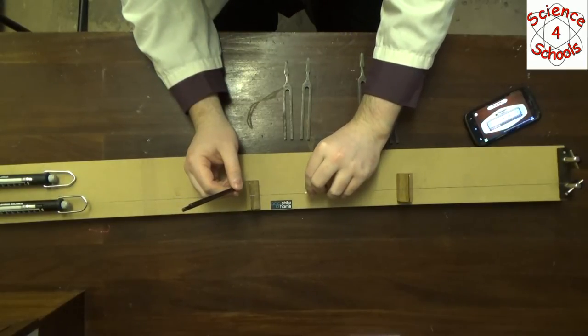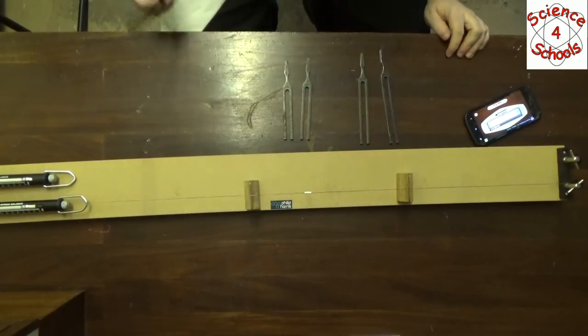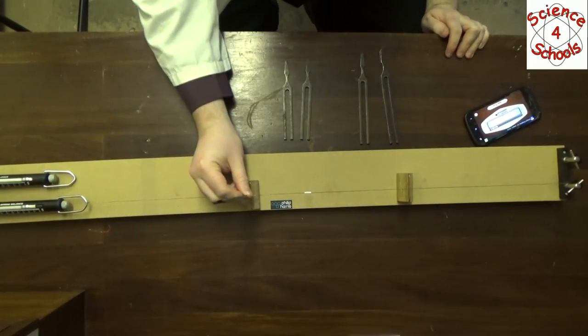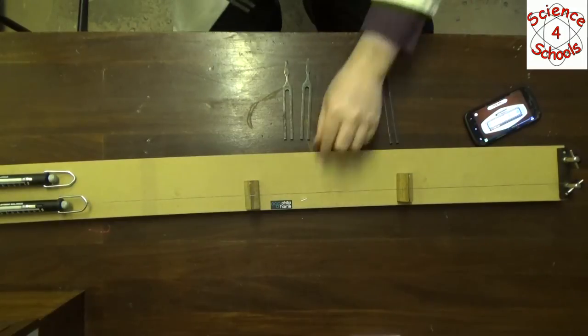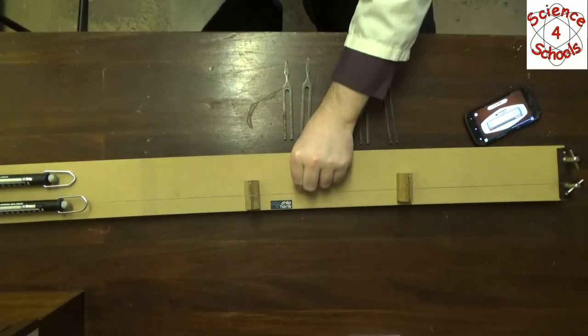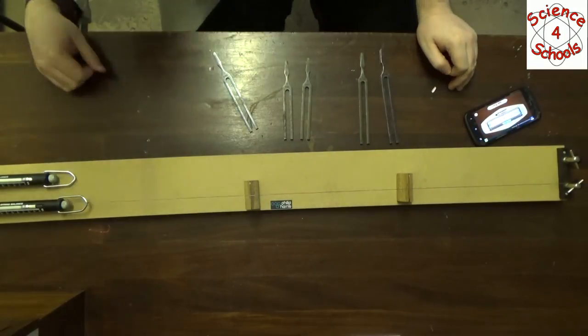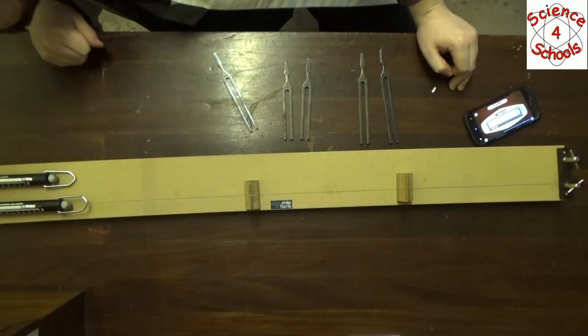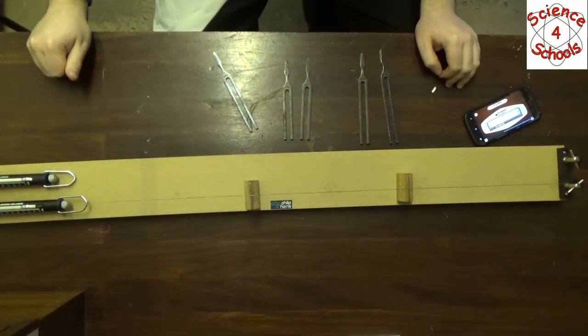So we hit the paper rider fall off just there. Once again I'm going to double check. Yep. So it worked twice in a row. That's good enough. So it looks like G is at about... I'll call that 12 Newtons.